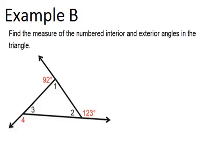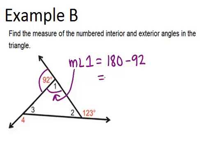To find angle 1 and angle 2, we can do what we did in example A. The 92 degree angle and angle 1 are a linear pair, so they have to add up to 180 degrees. So the measure of angle 1 will be 180 minus 92, or 88 degrees.